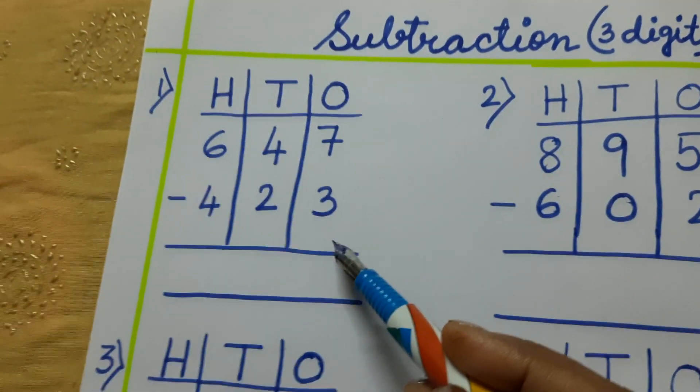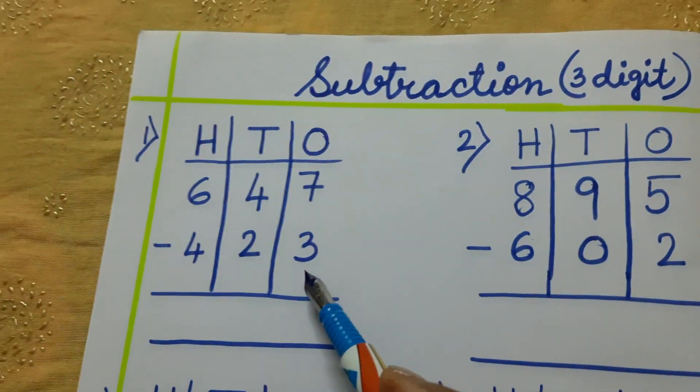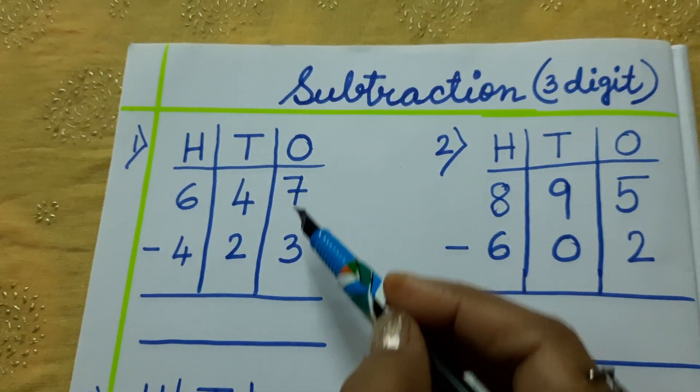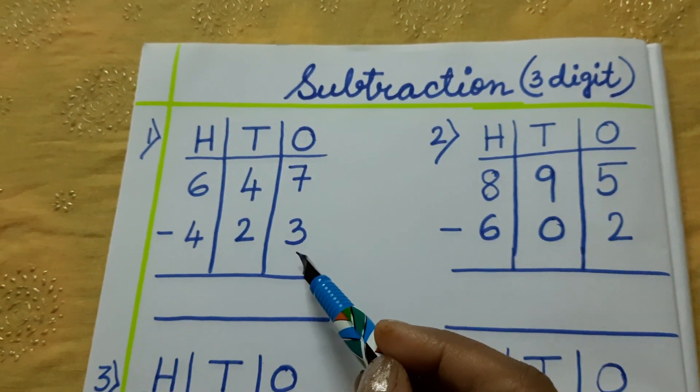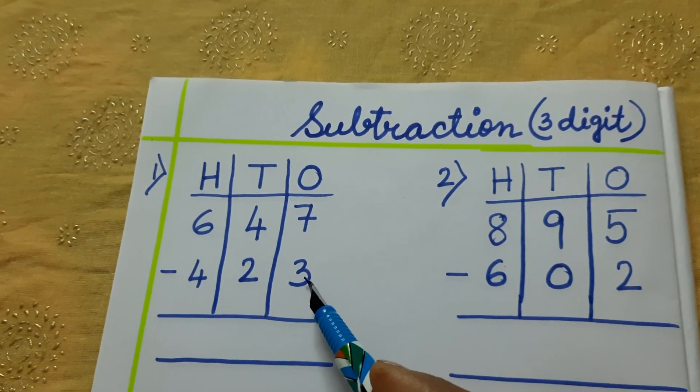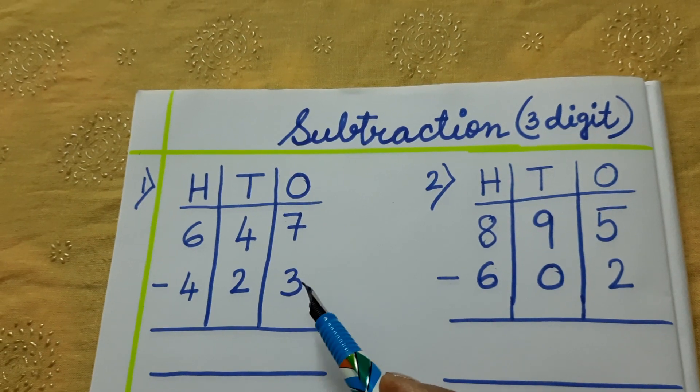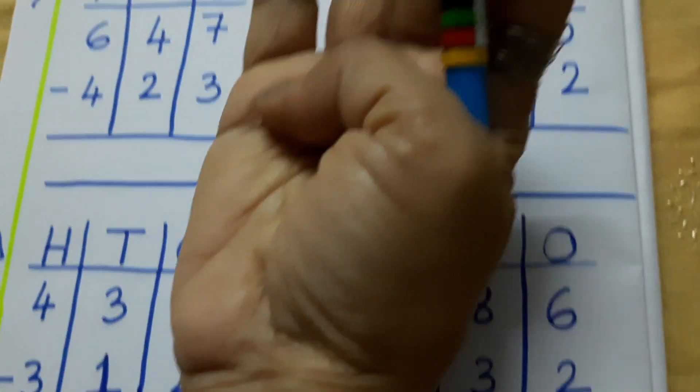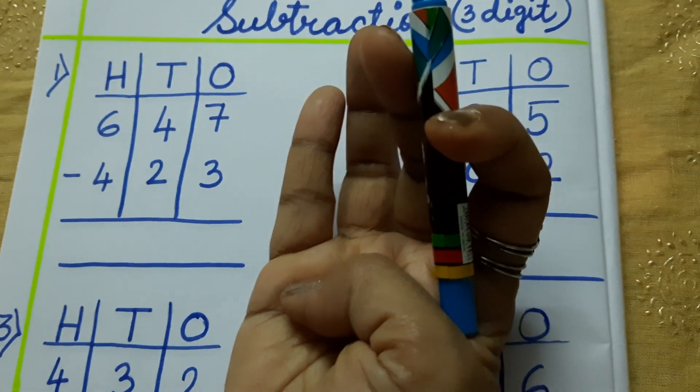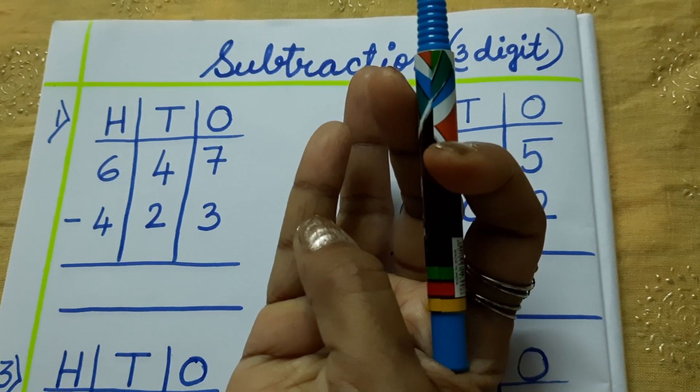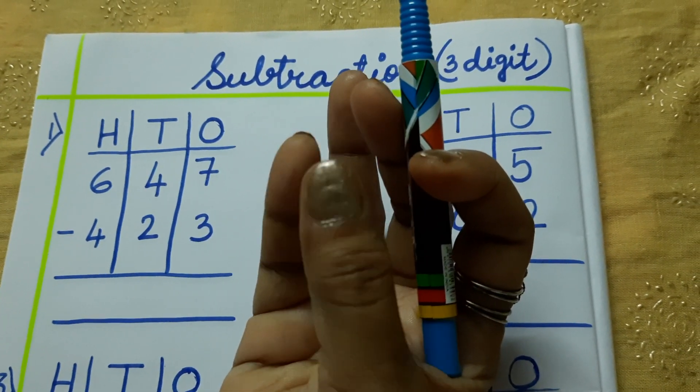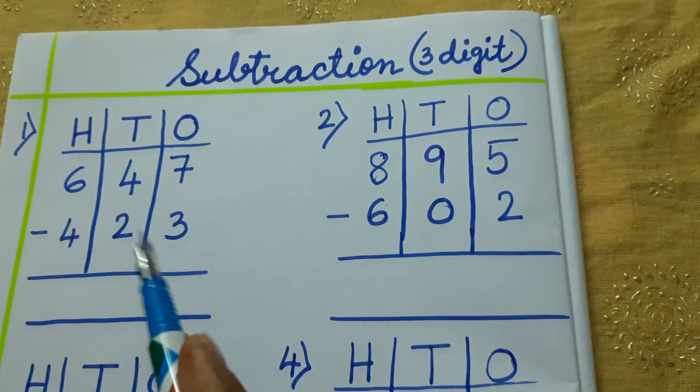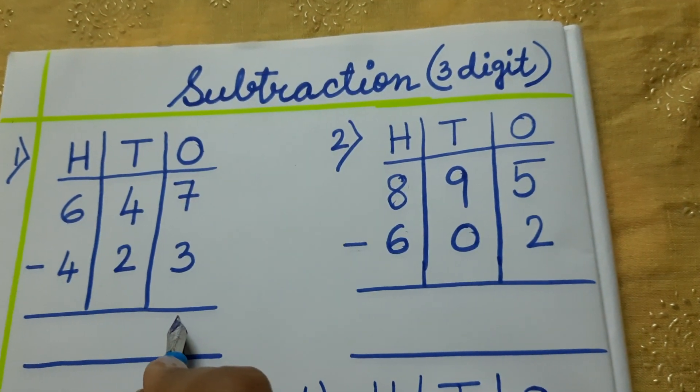In 1s what is there? 7 minus 3. Forget this. First you see 7 minus 3. How we are going to start? We will take the small digit, 3. I am keeping here. After 3 which number? 4, 5, 6, 7. 1, 2, 3, 4. So, 4.